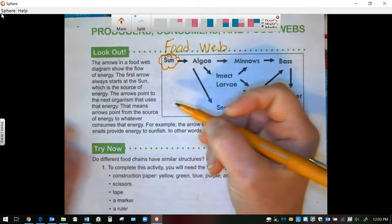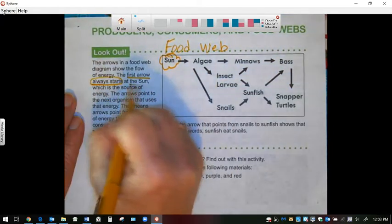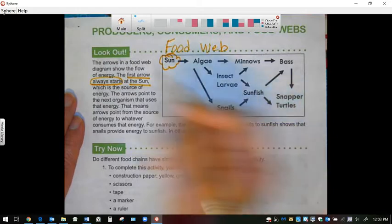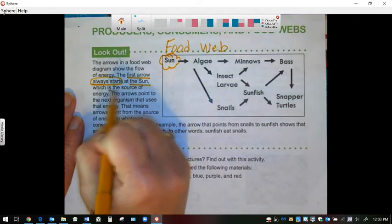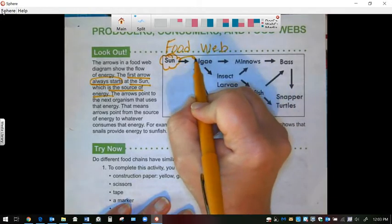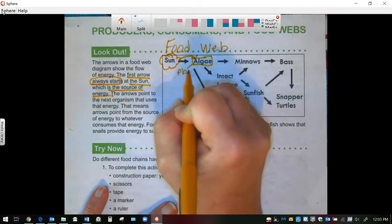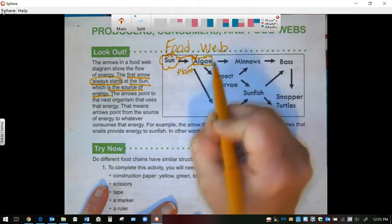Now you see how it always starts with the sun. All right, the first arrow right here tells you the first arrow always starts with the sun, because it is the source of energy. And then it makes algae grow. So algae is the plant.